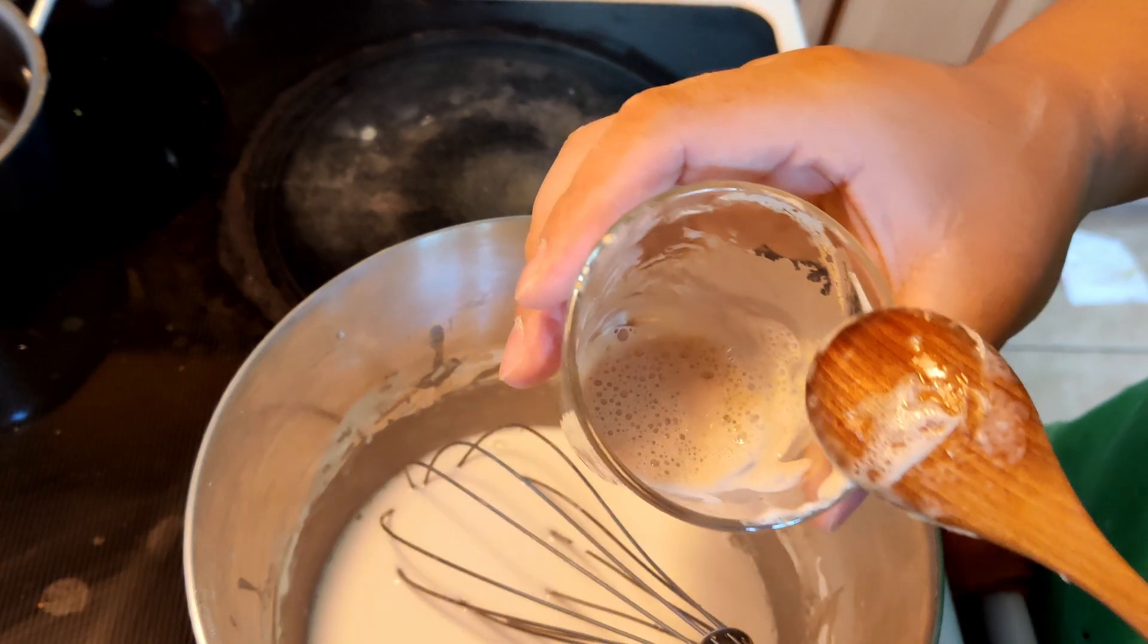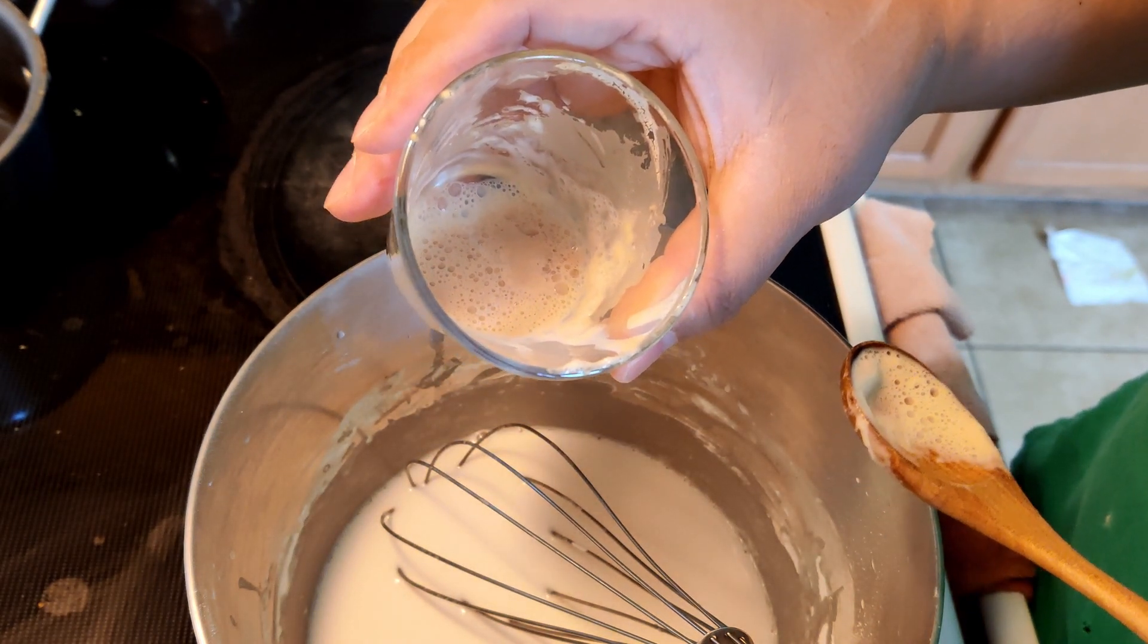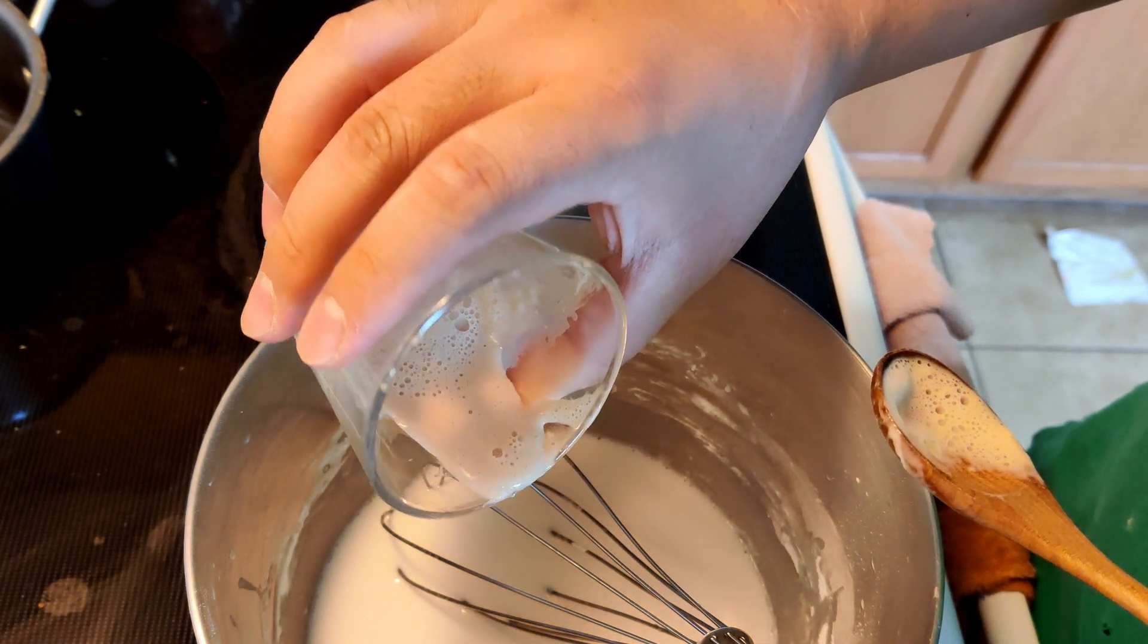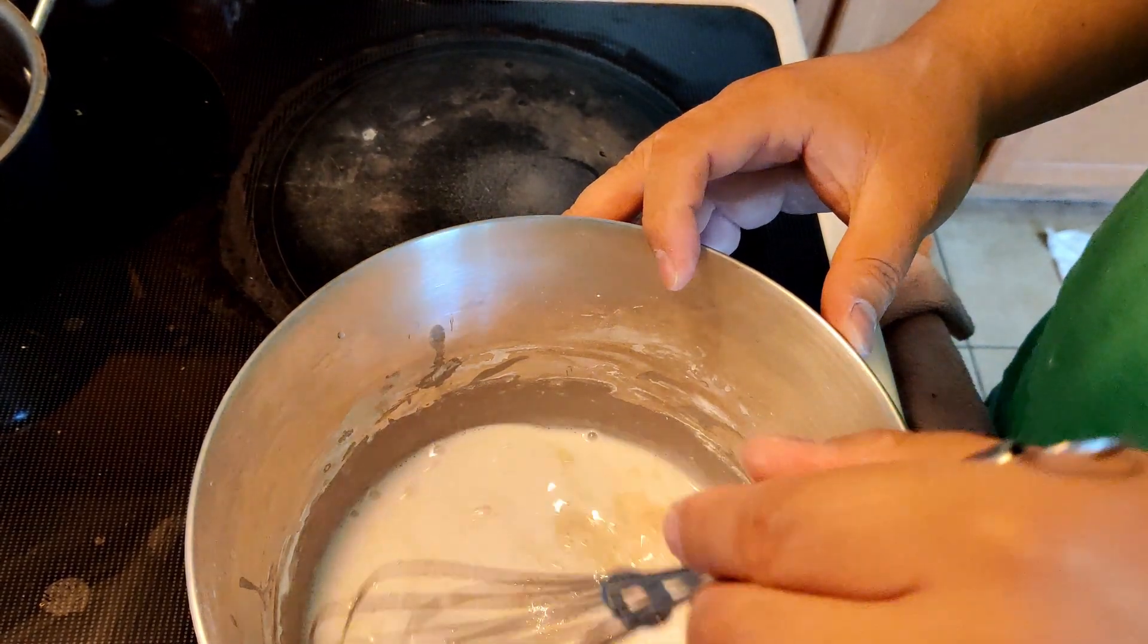I dissolved two grams of active dry yeast with one tablespoon of water. So we're going to add it to the batter and then mix it.